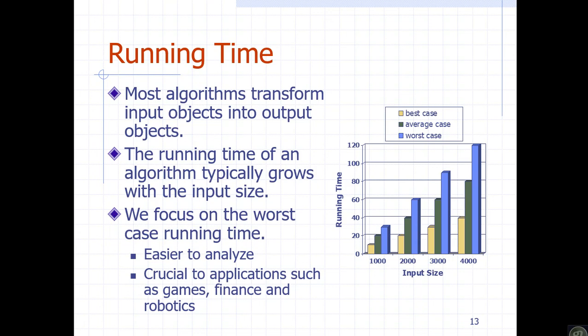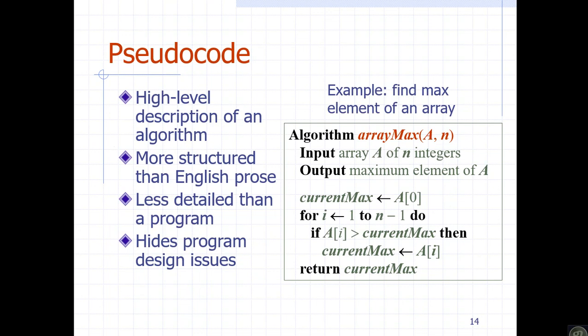That is the worst case. The average case is somewhere in between. This problem has three cases: the best case, where the algorithm finds the solution with the minimum number of primitive operations; the worst case, where the maximum number of operations are performed; and the average case, in between. Theoretically, running time is determined by analyzing these cases. The algorithm is a solution for a specific problem written step by step.